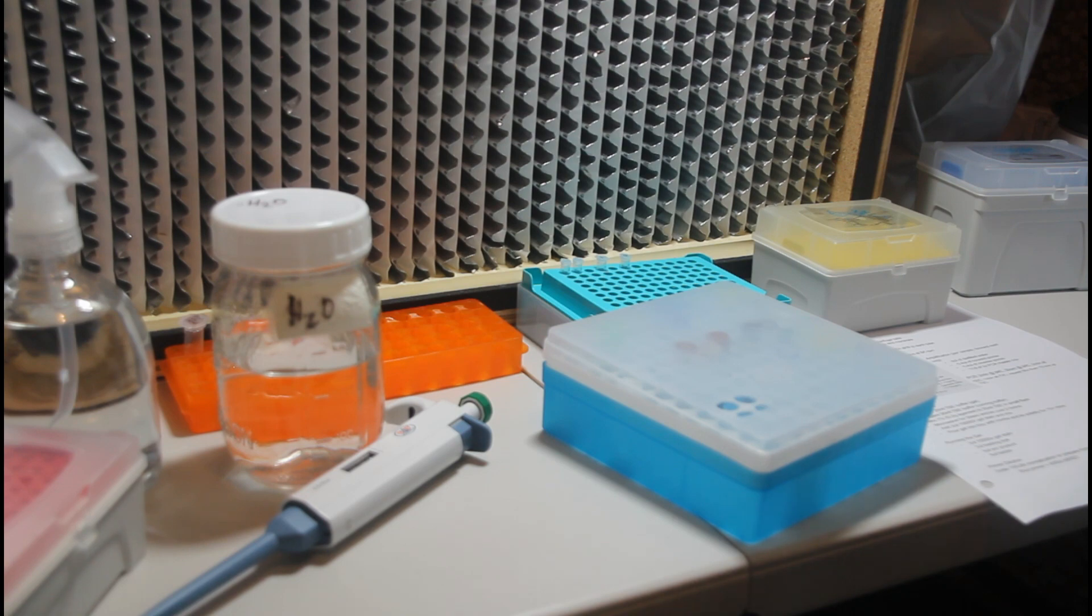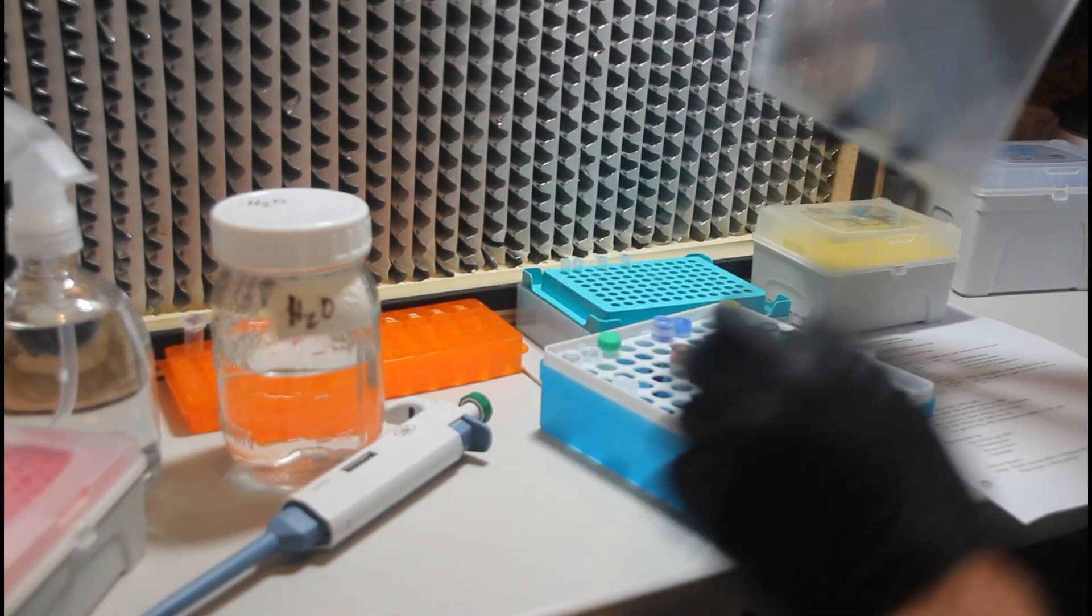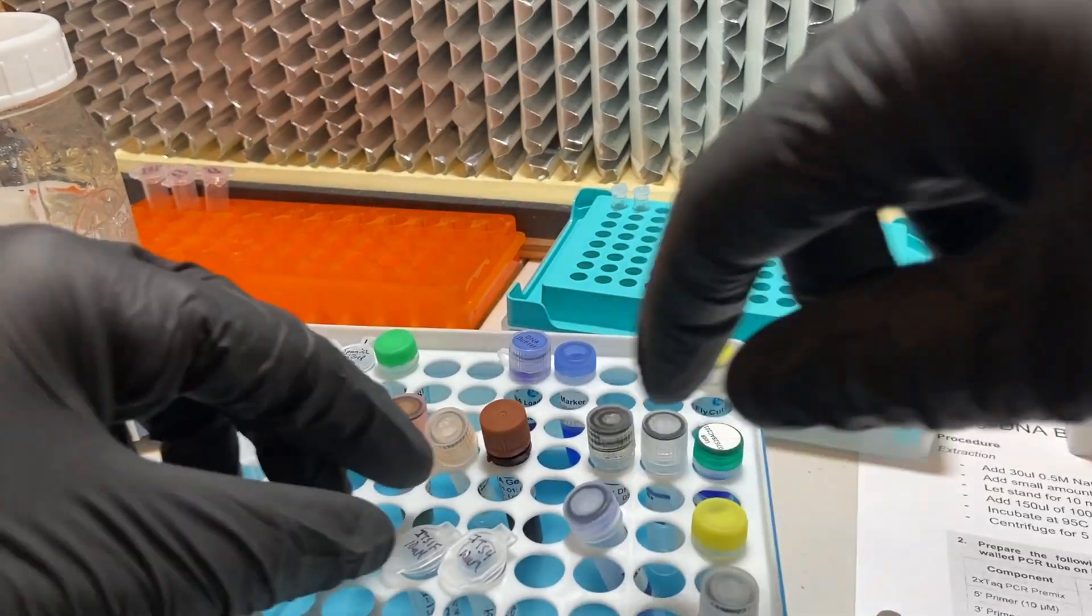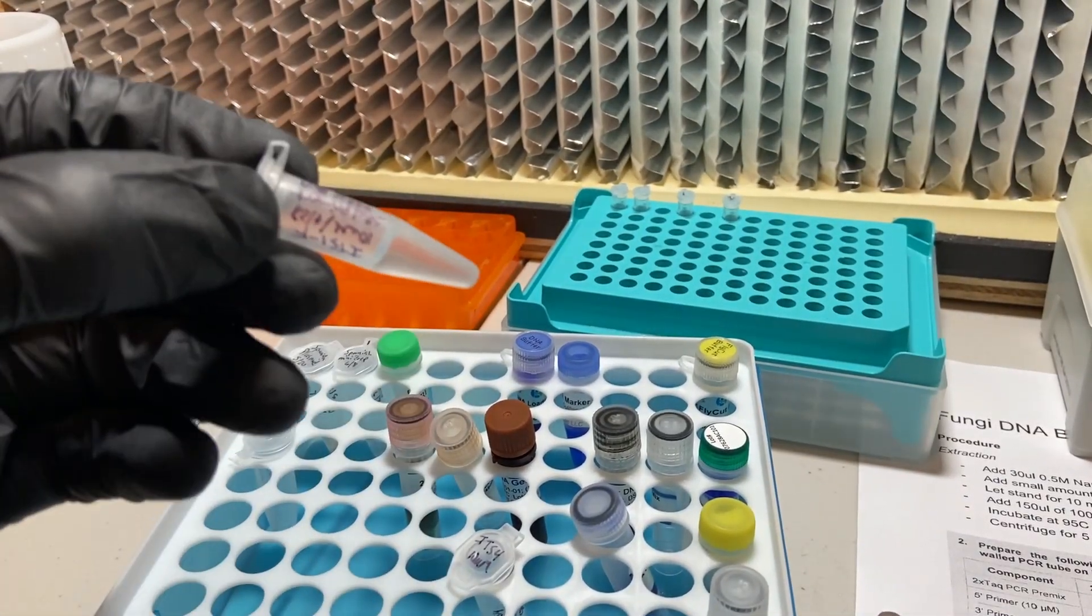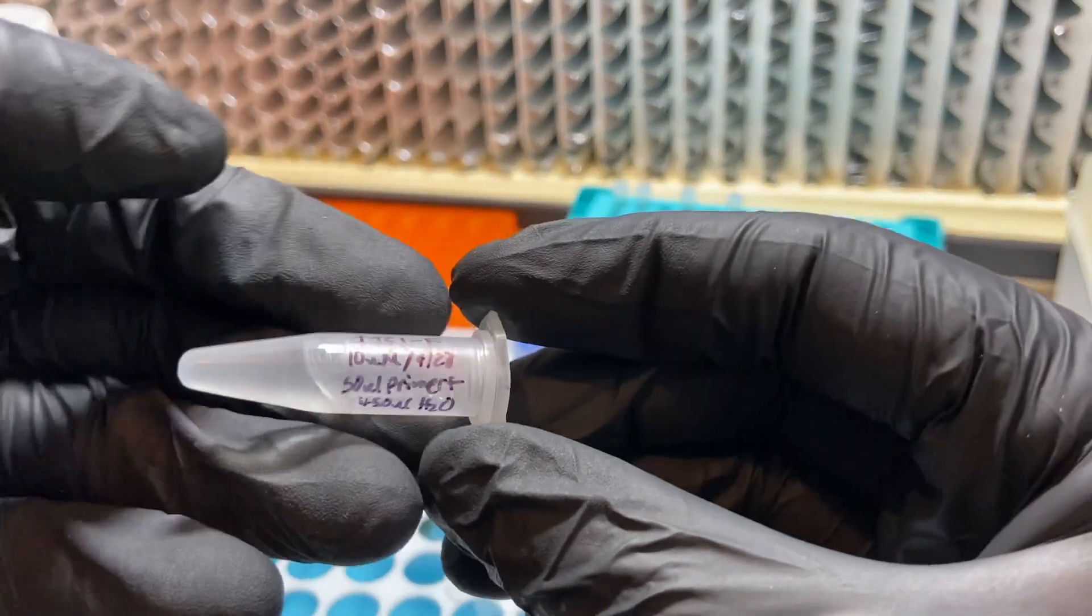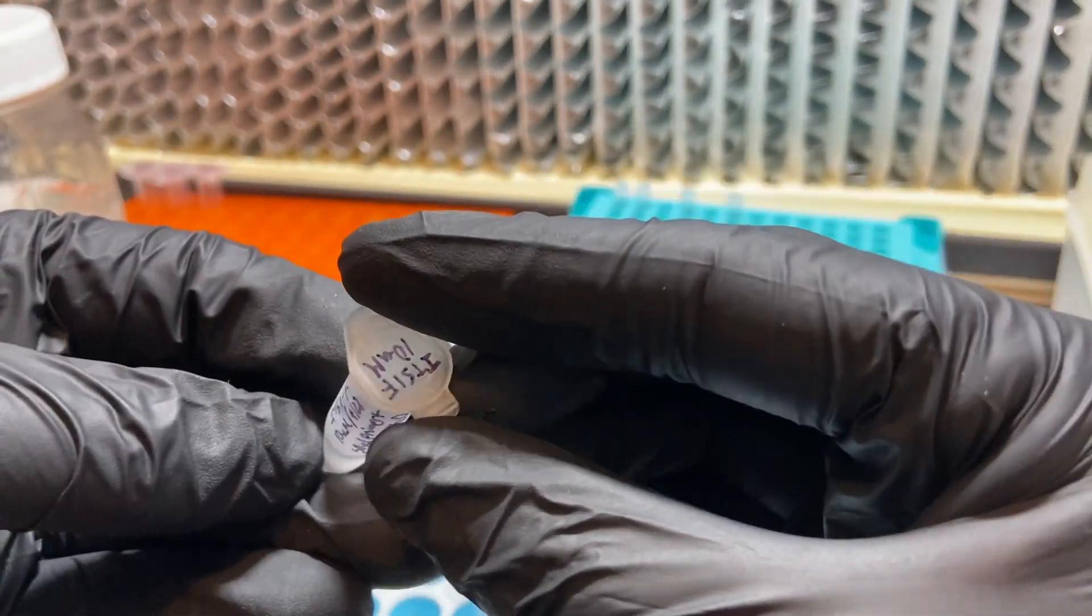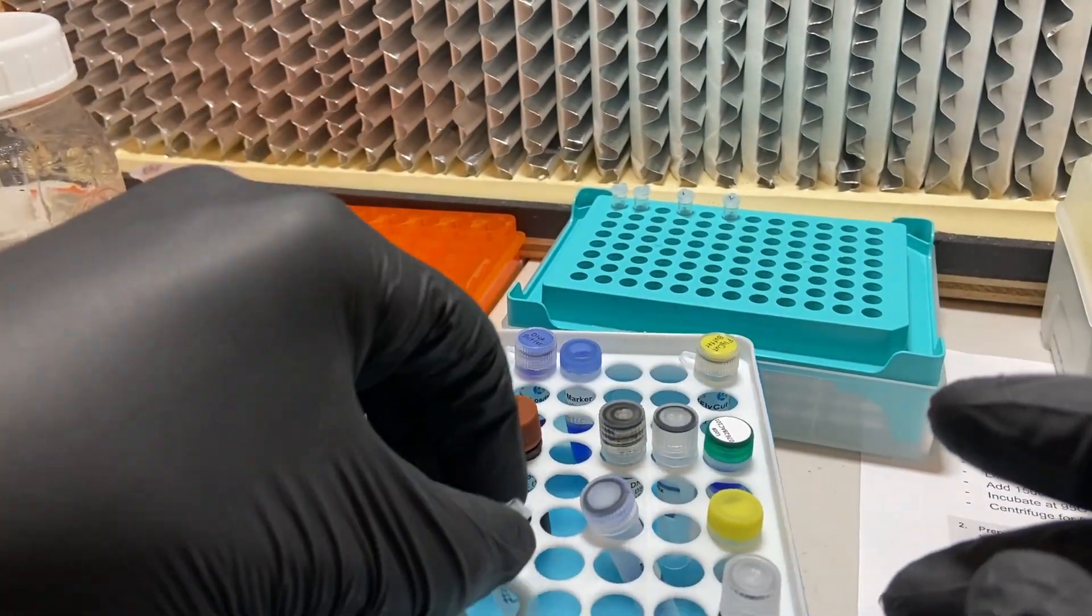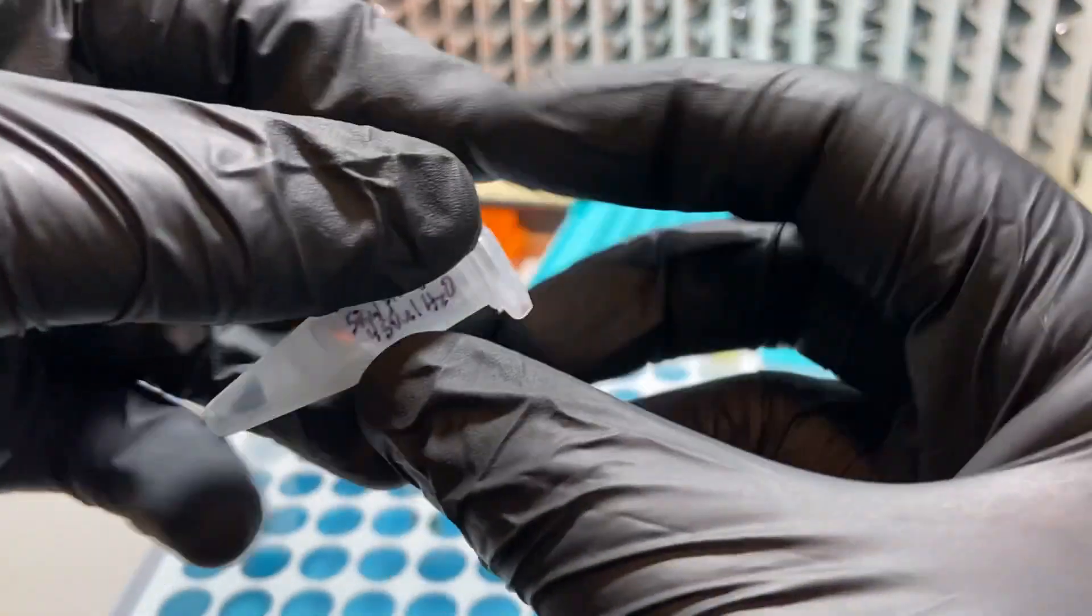After doing DNA extraction, we need to make enough copies of the DNA barcoding sequence so that there's enough to actually sequence. And we're going to do that using a technique called PCR. And this involves adding a forward and reverse primer. And these are just small nucleotide sequences that sort of attach to the beginning and end of the fungal genome that we wish to amplify.